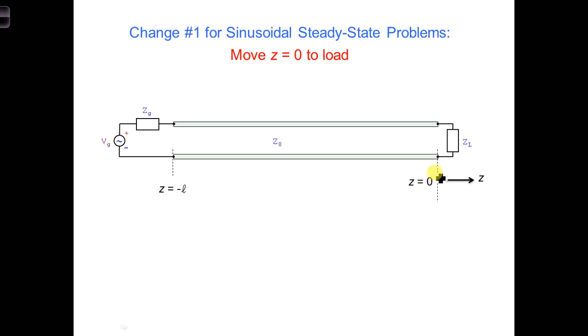so that z equals zero is at the load rather than at the generator end. One reason this is helpful is because then we can analyze what the generator sees at the beginning of the transmission line relative to what is at the end of it at z equals zero.